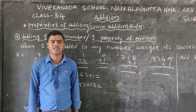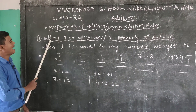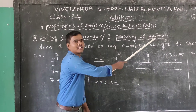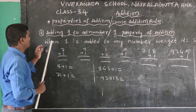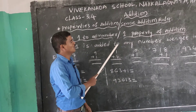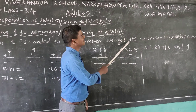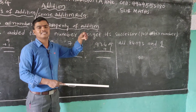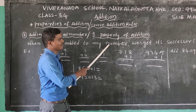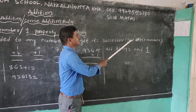The next property: adding 1 to a number, also called the one property of addition. Both have the same meaning. When 1 is added to any number, we get its successor. Successor means the just-after number.